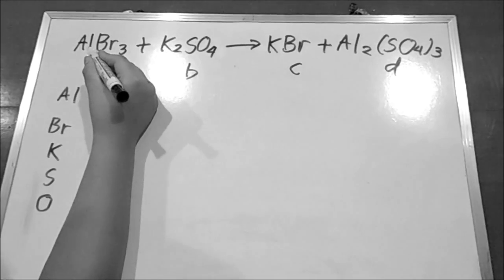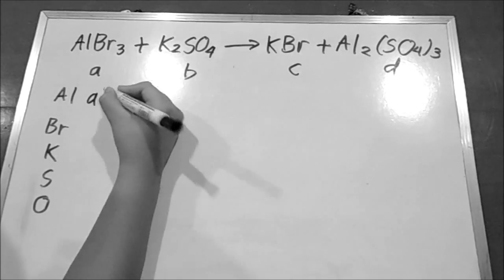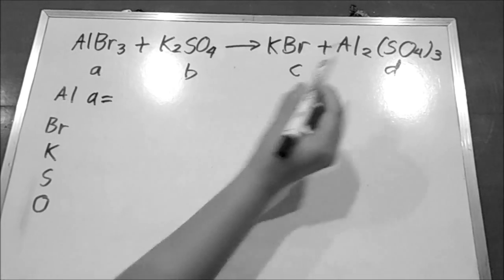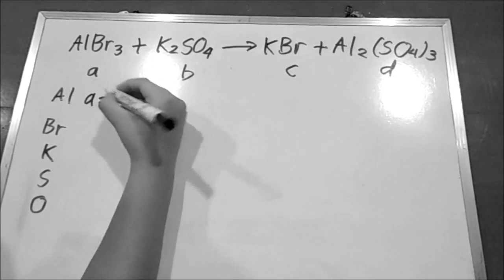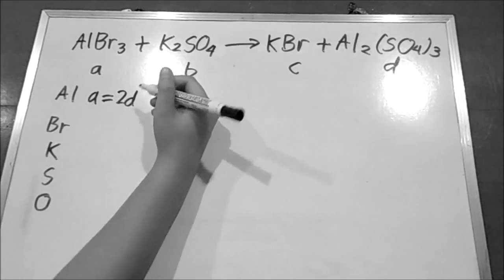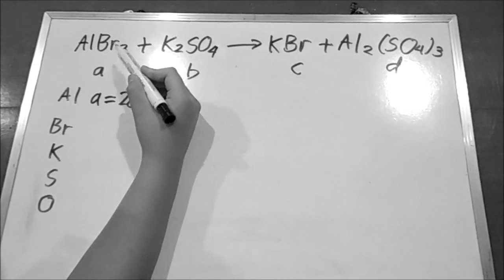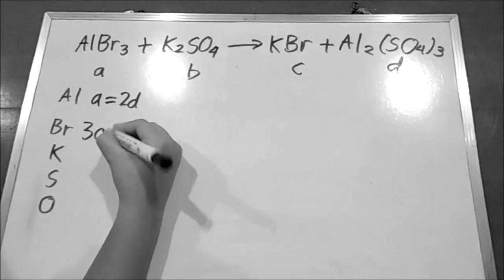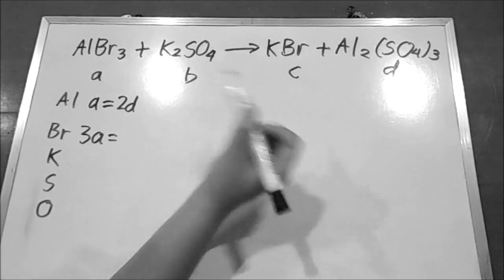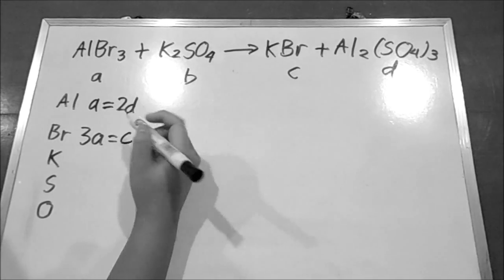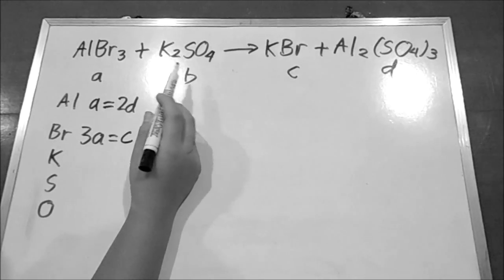Since in A there is only one aluminum, so we write down A. And in D there are two aluminum, so we write down 2D. And in C there is only one potassium, so we write down C. In B there are two potassium, so we write down 2B.